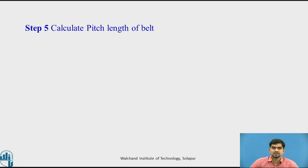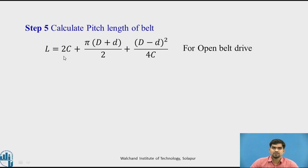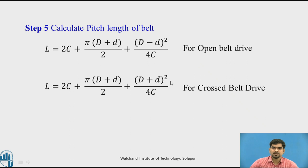Step 5: Calculate the pitch length of the belt. Using the pitch length equation with known values of center distance C, larger pulley diameter D, and smaller pulley diameter d, we calculate pitch length L. This equation applies to an open belt drive. Similarly, for a cross belt drive, we use the corresponding equation.